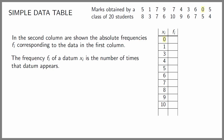For data 0, because it appears one time, its absolute frequency is 1. For data 1, again it appears once, so its absolute frequency is 1. Data 3 appears 2 times so its absolute frequency is 2. Data 4 appears 2 times so its absolute frequency is 2. Data 5 appears 3 times so its absolute frequency is 3. Data 6 appears 3 times so its absolute frequency is 3. Data 7 appears 4 times so its absolute frequency is 4.